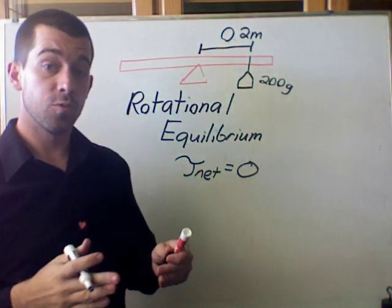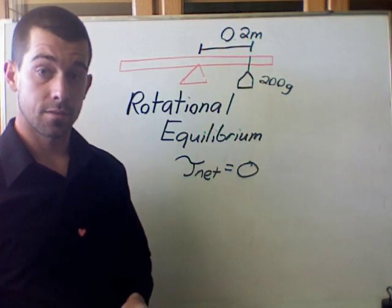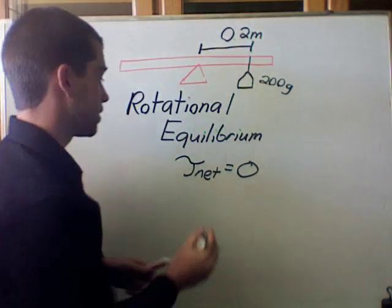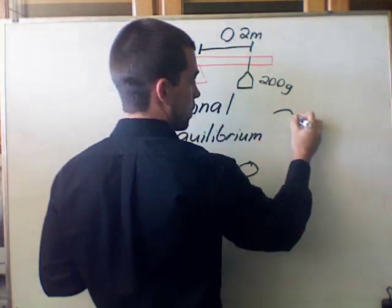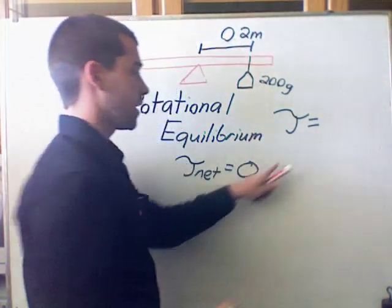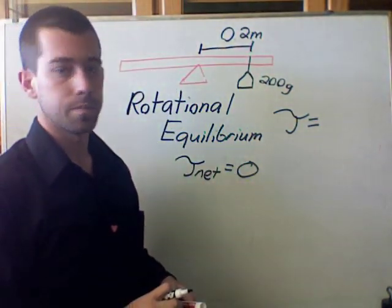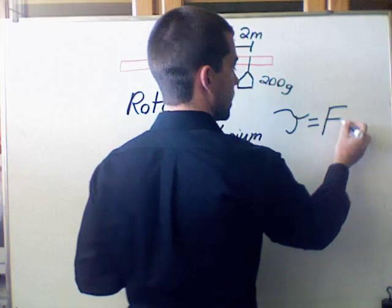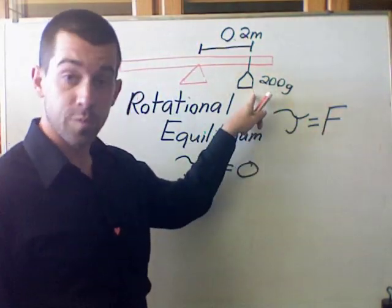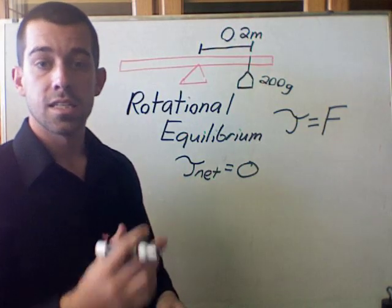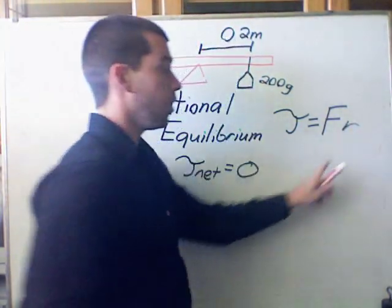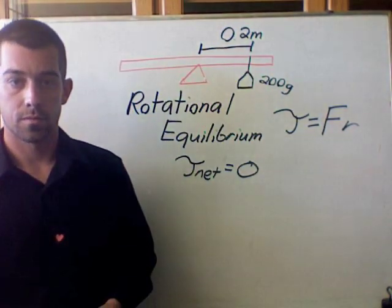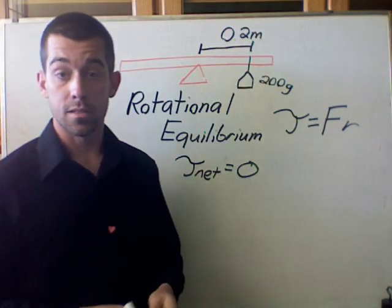Now I can solve for the torque from that mass using an equation for torque. And the equation that we use for the torque on an object is that the torque, that little script T represents torque, the torque equals the force that's being applied. In this case the force is the force of weight from that mass times R. R is the distance between the mass and the center of rotation.